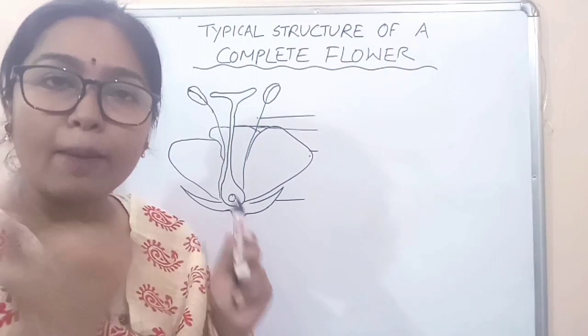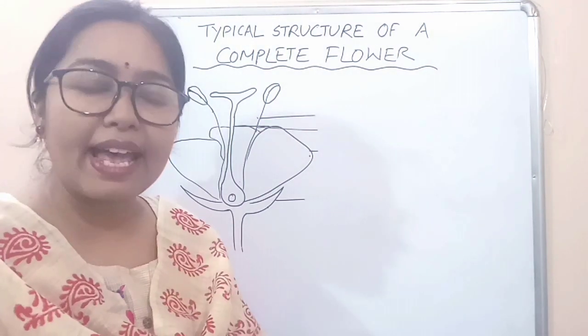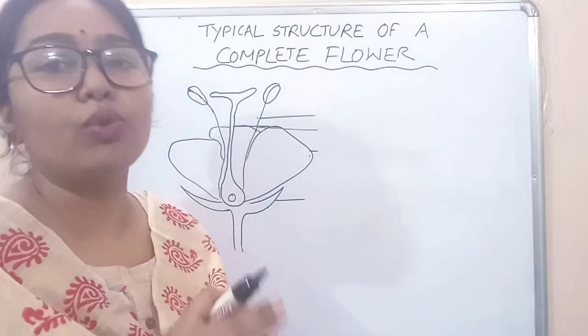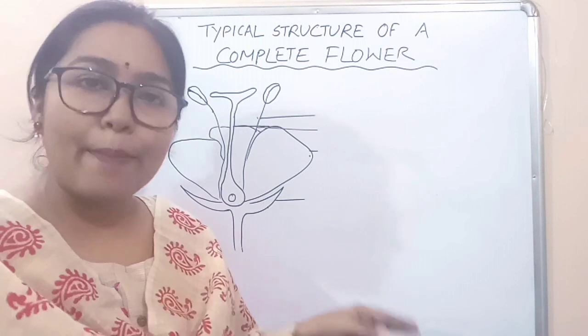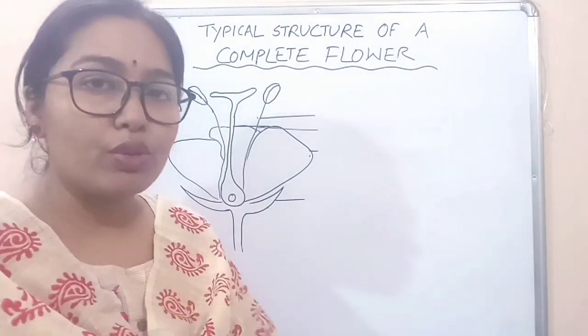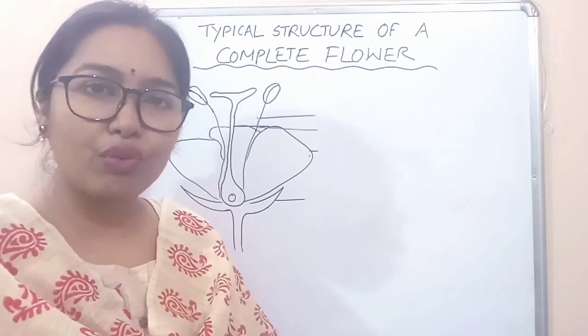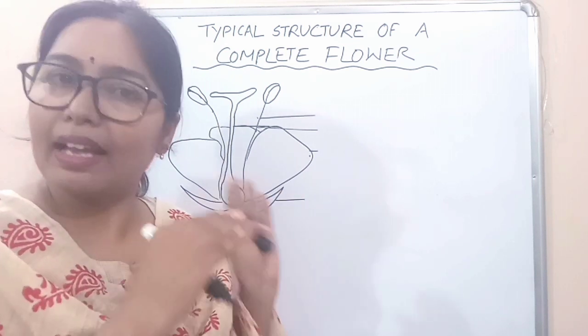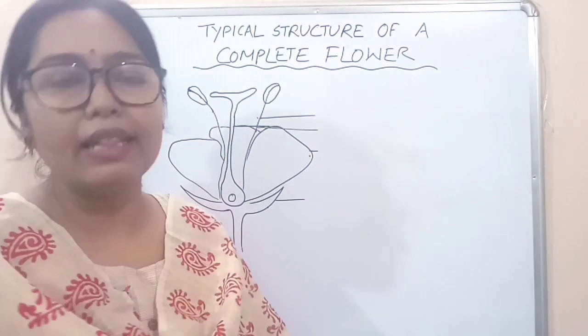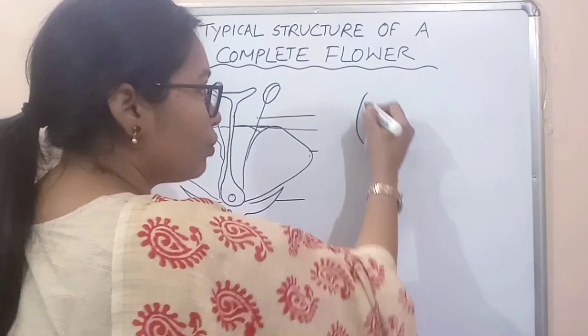So whenever these four parts are present in a flower, then the flower is considered a complete flower. If any one of these is absent, or two of these are absent in any flower, then those are incomplete flowers. So there is a clear distinction between complete and incomplete flowers. The male part consists of